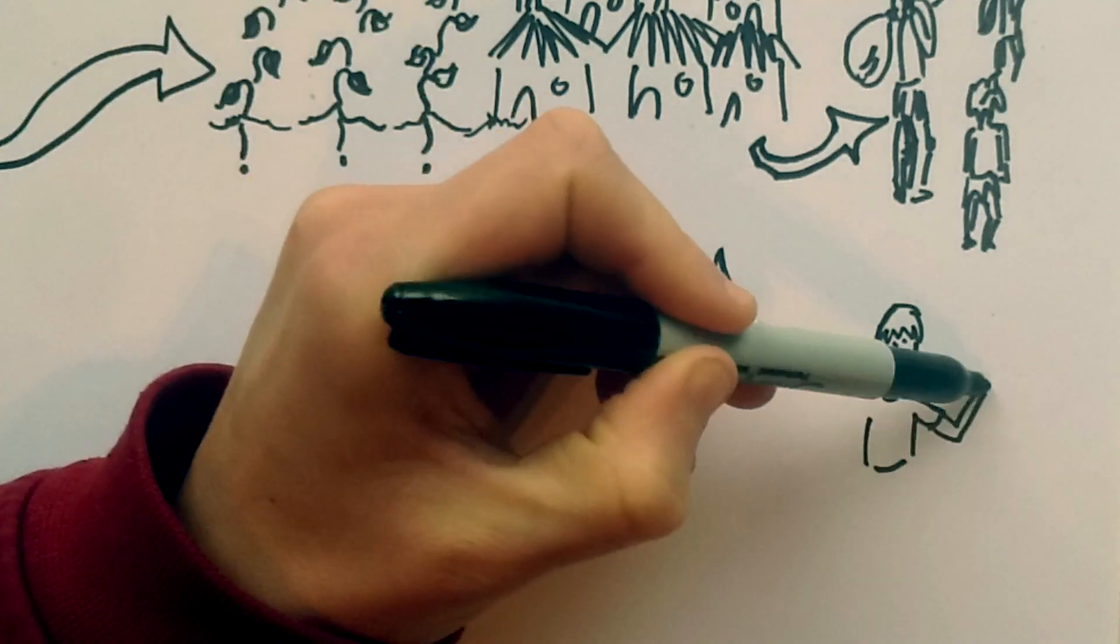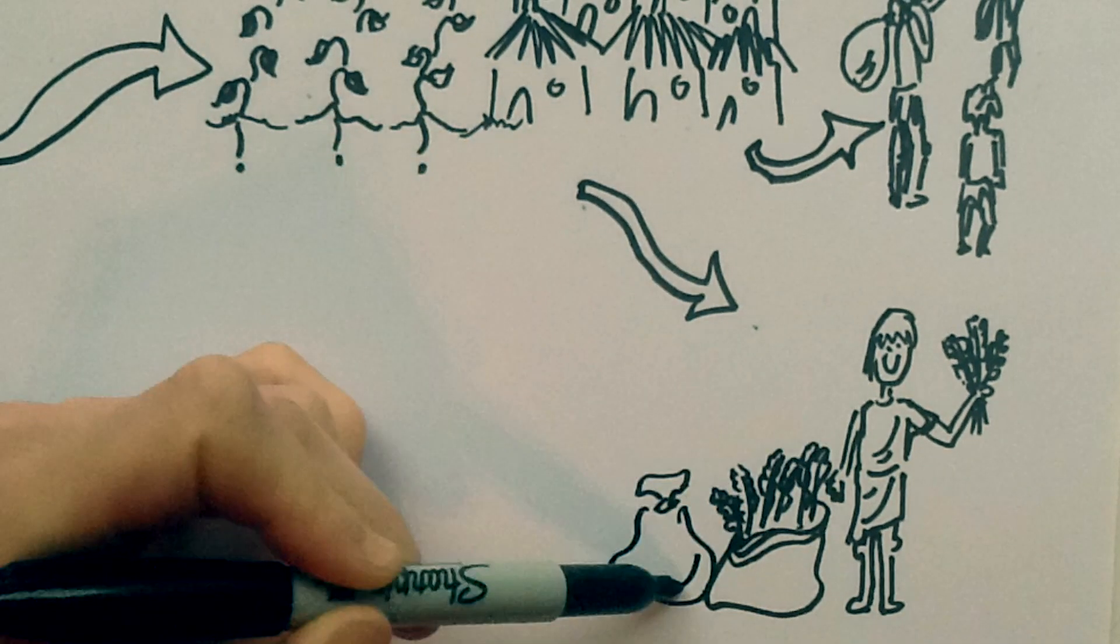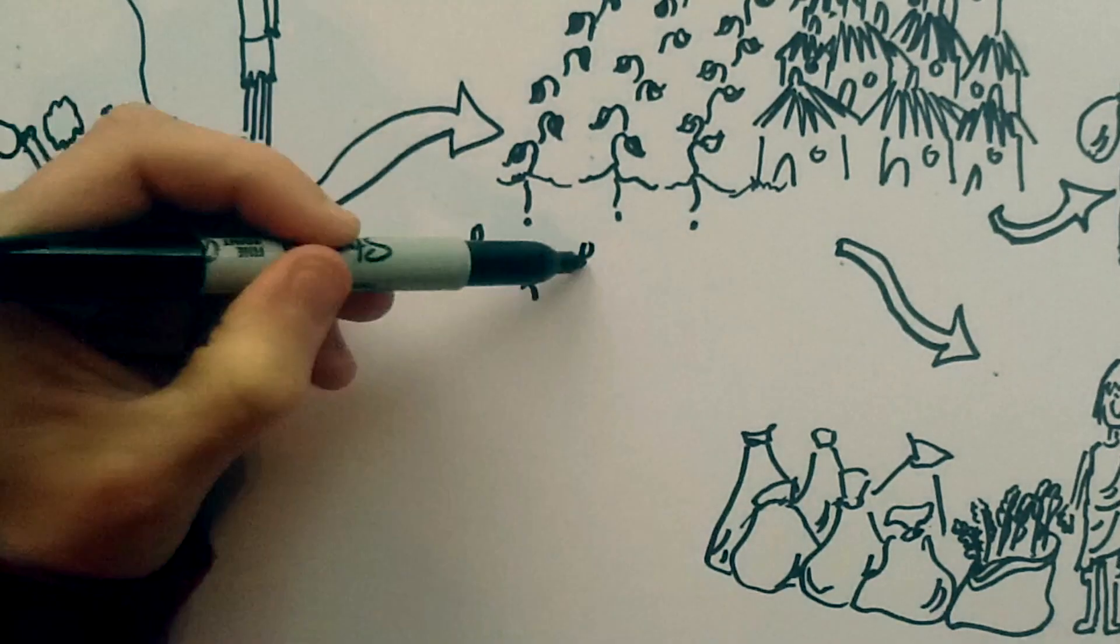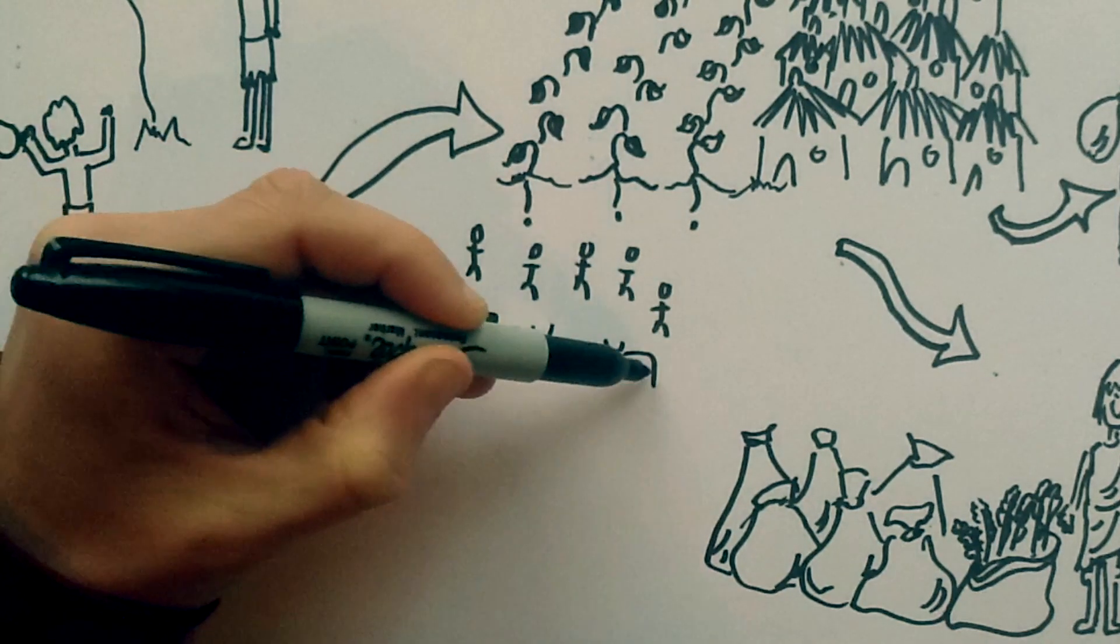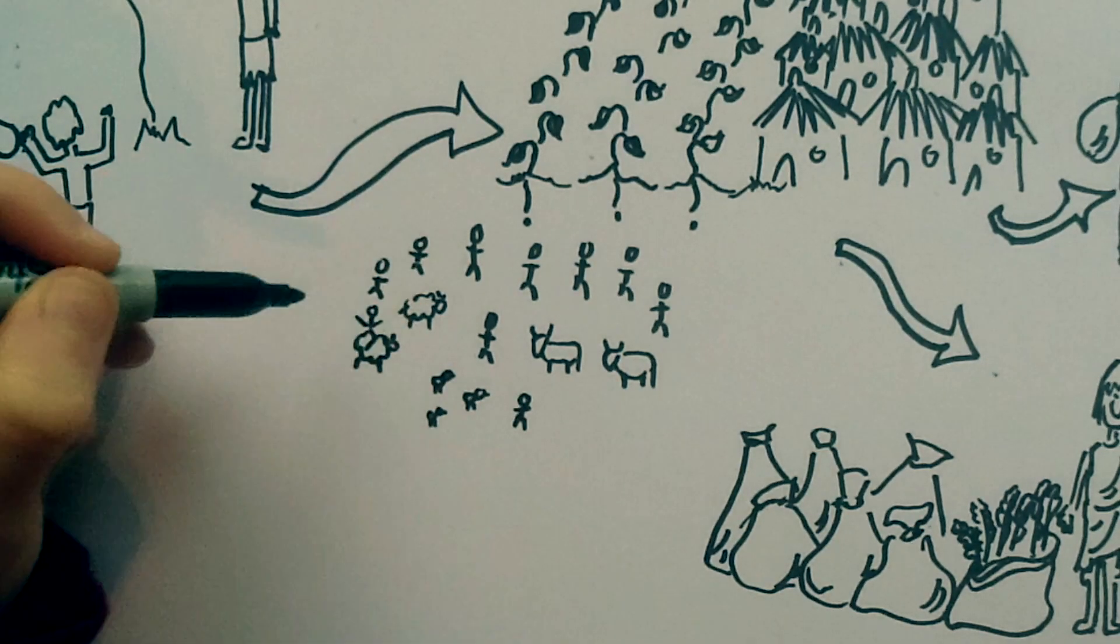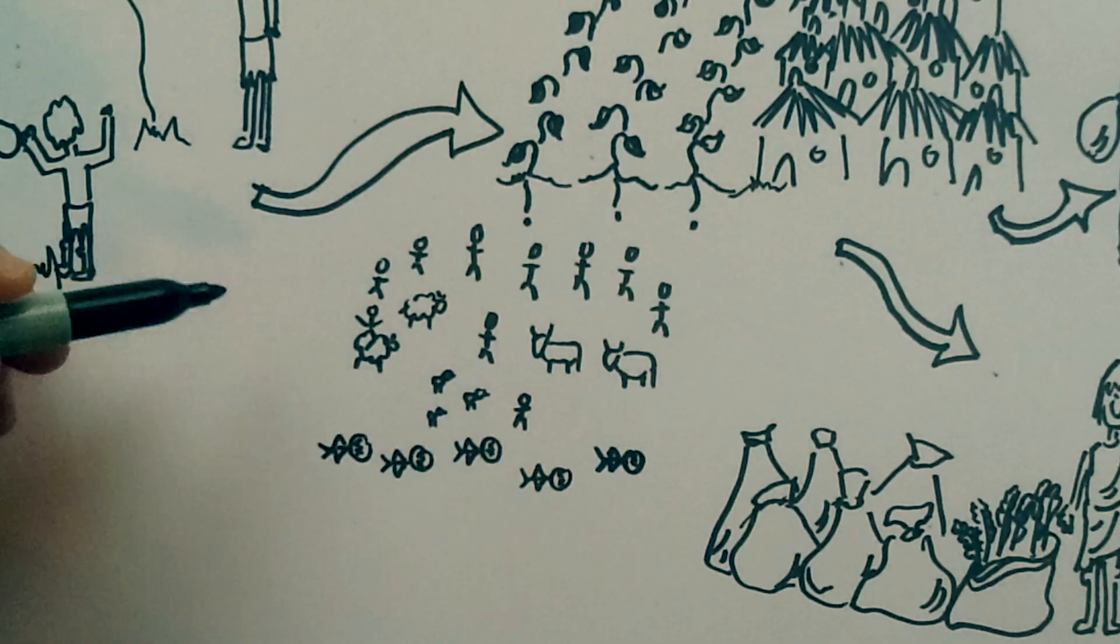Farming also allowed many more people to live all together because we could get more food from one bit of land, and it was the kind of food we could store for later. But because there was all this food, and all these people and animals living together, we ran into problems. We got lots of deadly diseases from living so close to other humans and animals.